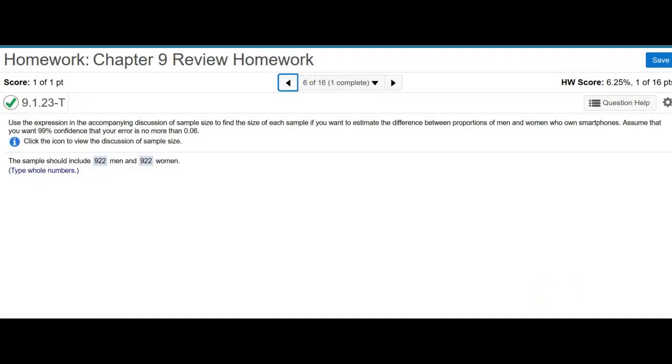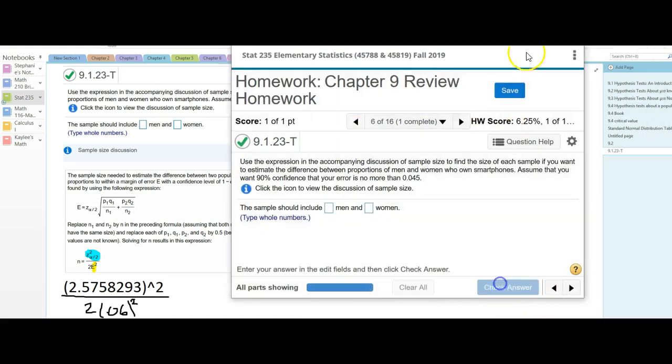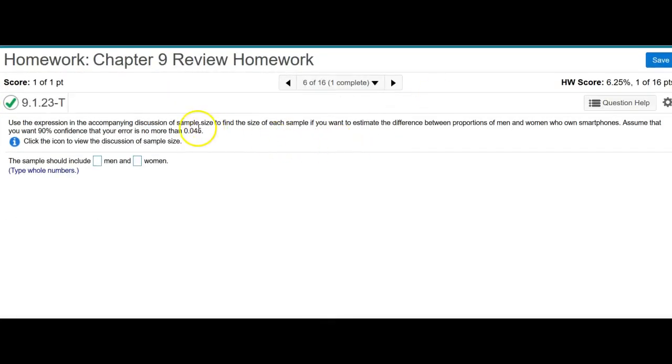If I look for a similar question at the bottom of the page, I can click similar question. And you can see the E is going to change, and your confidence interval is going to change from 99% to 90% confidence. So I have a 10% to the right or the left of that, and if I divide that by 2, that gives me 5%.